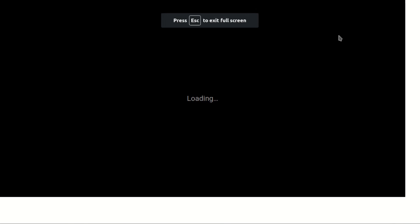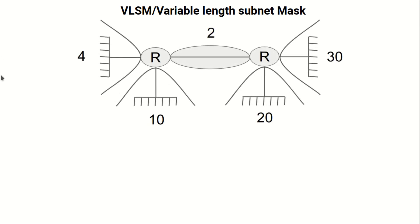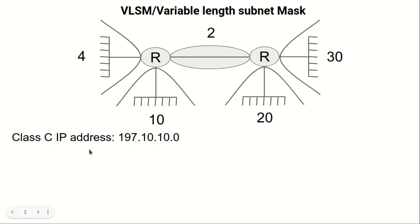Let's move to the slideshow again and discuss what VLSM is. In the previous video I showed you subnetting — VLSM is a little bit different from subnetting. Here is a network that has two routers connected with IP addresses: 30, 20, 10, 4, and 2. These are different kinds of IP address counts. We'll start from 30 because it is the biggest.